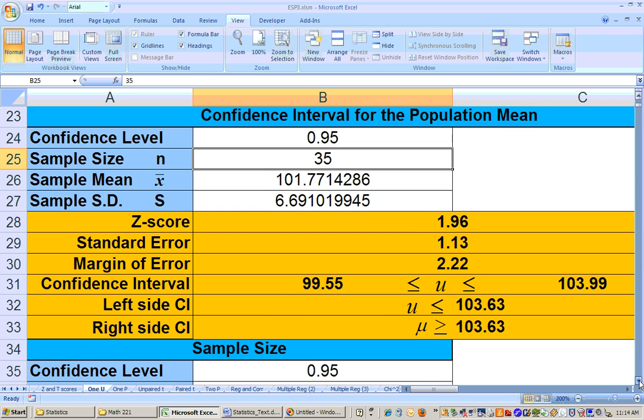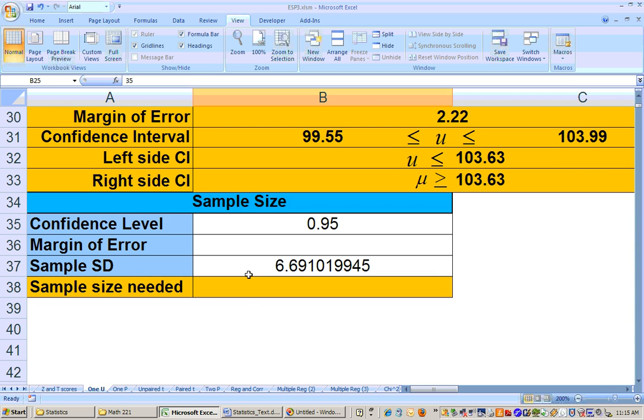But right below here is an area that says sample size. So see, this sheet here, 1 mu sheet, does everything for means. It does confidence interval, sample size determination, and even on Chapter 7, when we do hypothesis tests for the mean, it does that too.